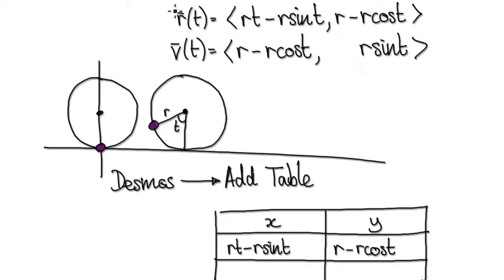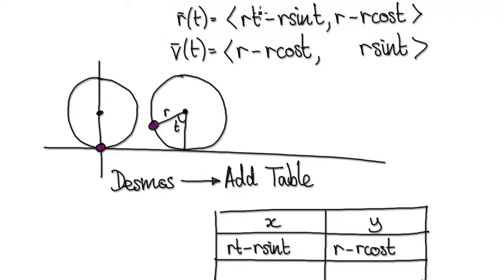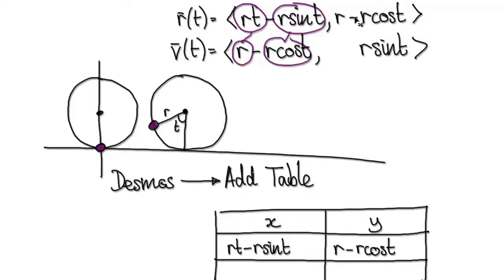We've seen this before. If you have a position vector and you want the velocity vector, then you differentiate each component with respect to time. Differentiate the x component with respect to time — that would then be R. Differentiate the y component with respect to time — that gives this result. R is just a constant, the radius of a circle — it doesn't change.